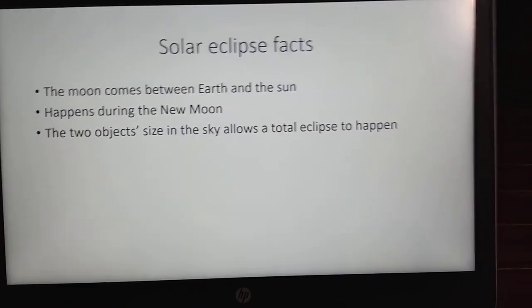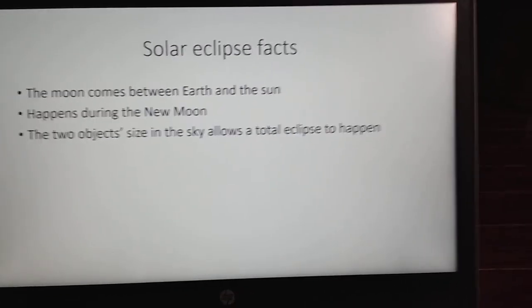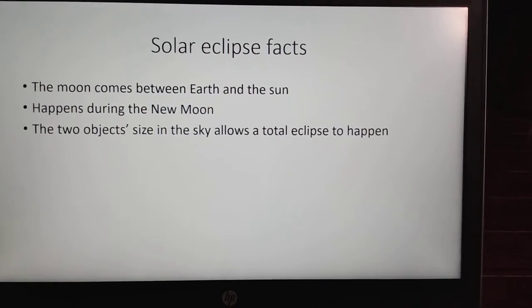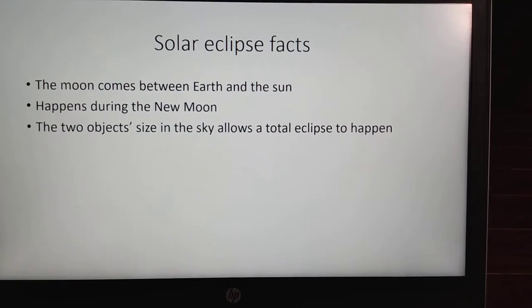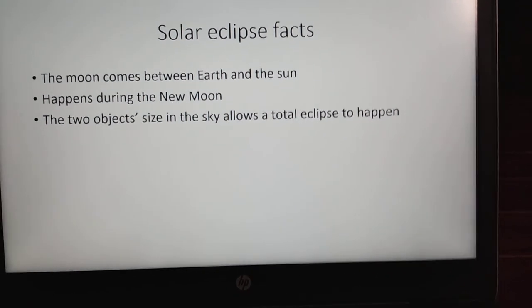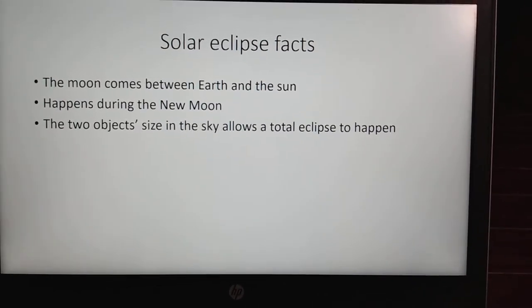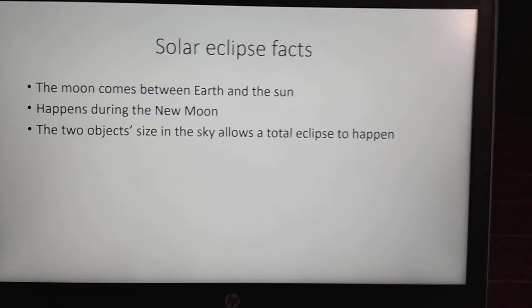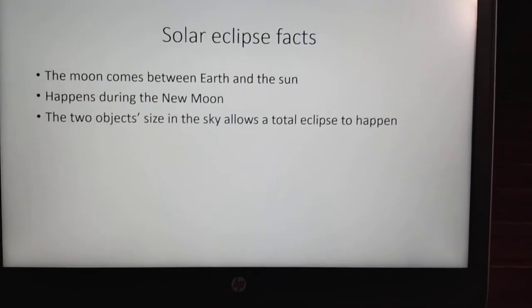So you may be thinking, why then aren't all of the eclipses we see annular? Well, the sun is actually 400 times farther than the moon. So then that's how the sun appears to be the same size as the moon.